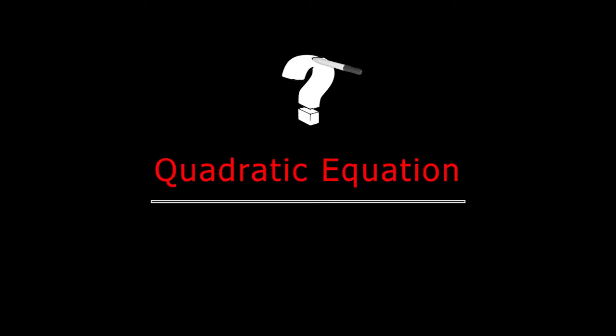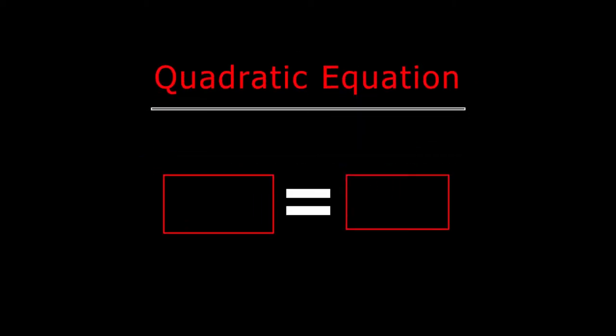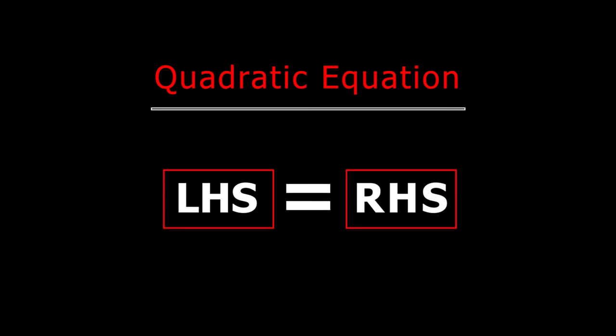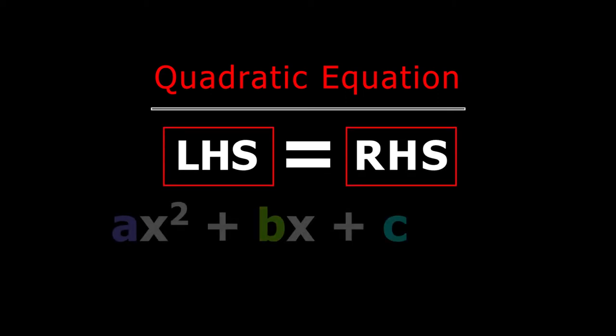Could you tell me what a quadratic equation is? We all know that equations have two sides — one on the left hand side of the equal sign and the other on the right hand side. When we equate the general form of a quadratic polynomial to 0,